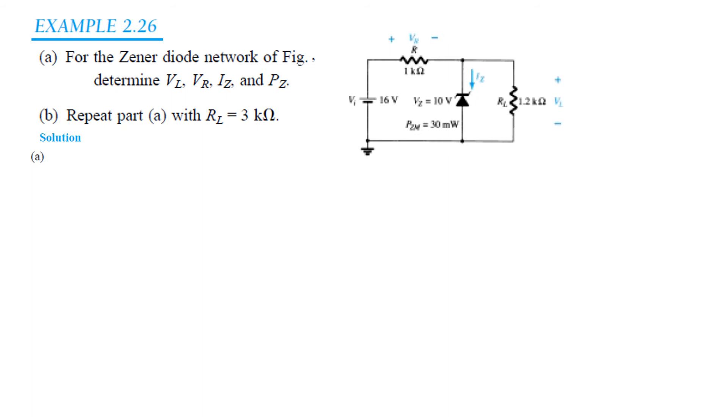Now let's see example 2.26. For the Zener diode network we have to find out VL, VR, IZ and the power PZ. And we have to repeat this with RL 3 kilo.